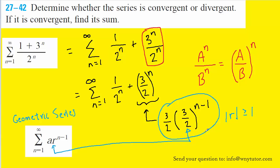The absolute value of our r value, 3 halves, is indeed greater than or equal to 1. And because it is, we can conclude that that part of the series we circled previously is indeed divergent.